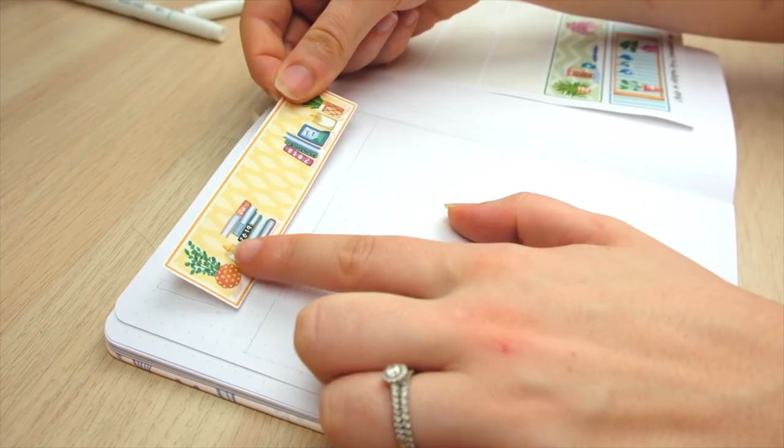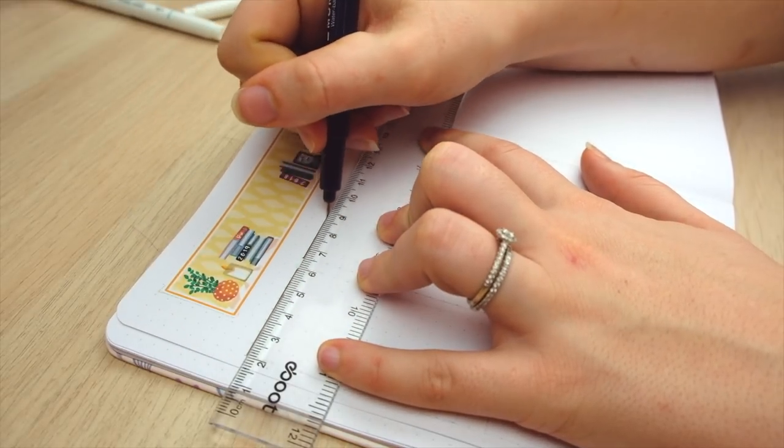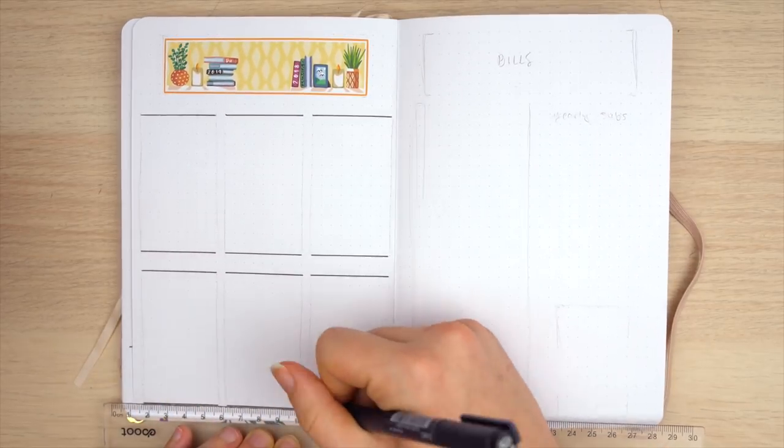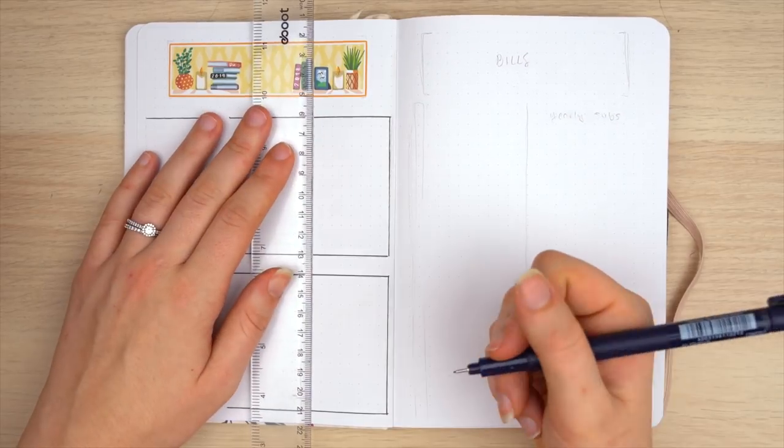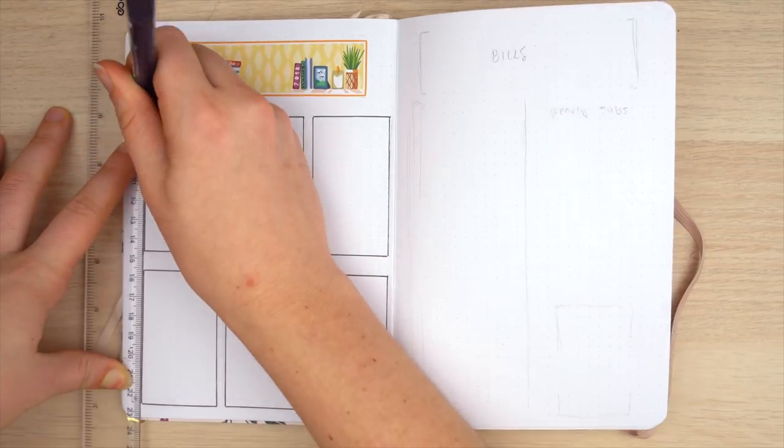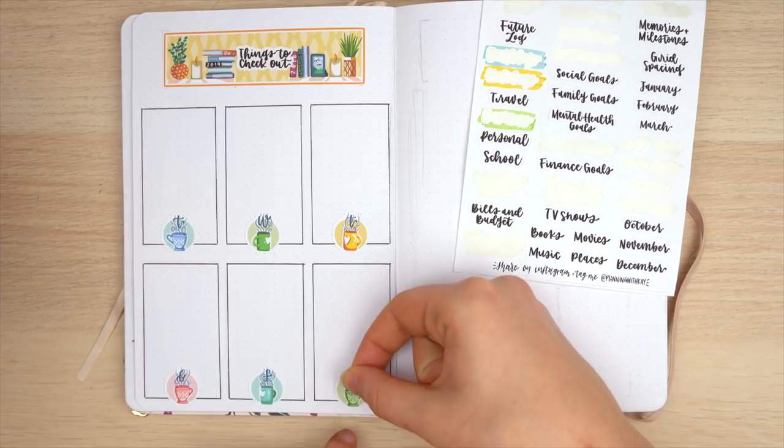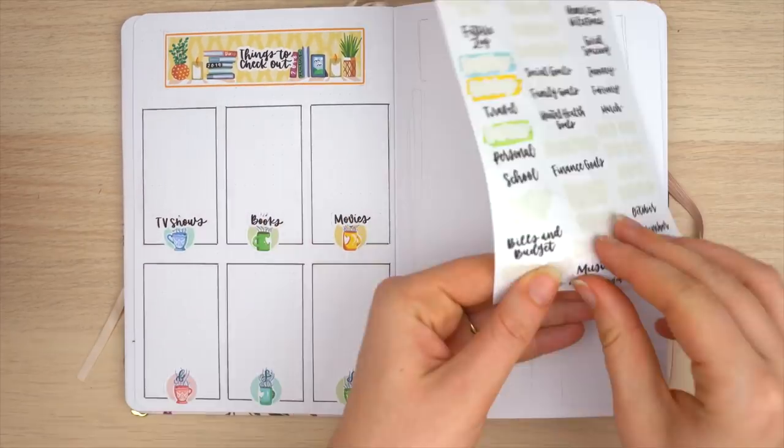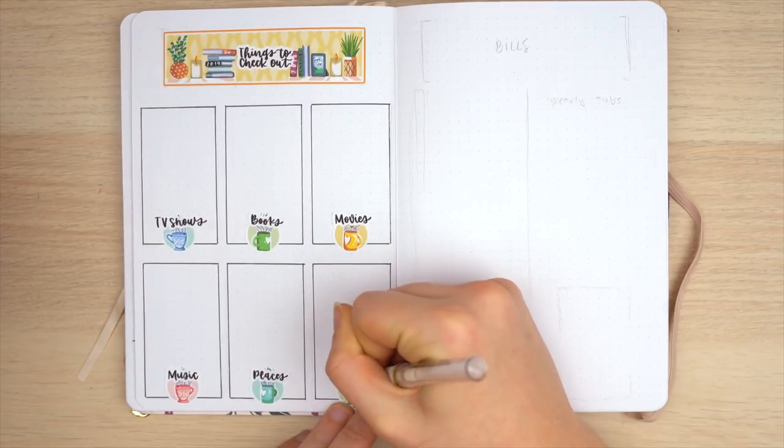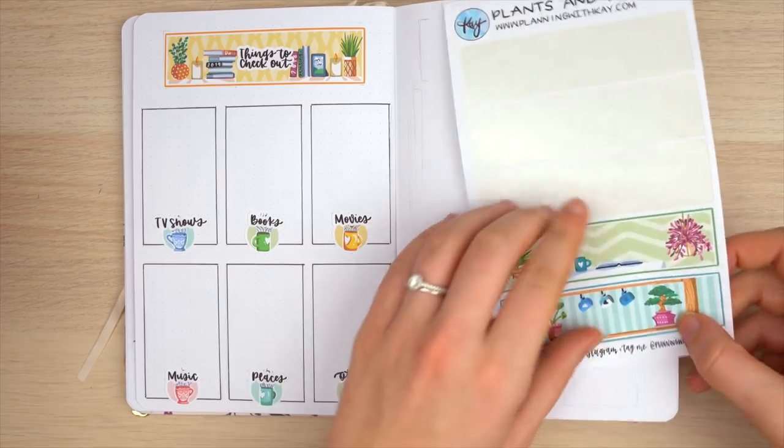Alright, so this is my second to last spread of this setup - we're almost there. On the left here, I'm creating a page called 'things to check out.' I went on my Instagram before filming this setup and asked about different spreads that you all love to set up when you're setting up a new bullet journal, and this was something that a lot of you really enjoy - having a spot to write down different shows or books or movies or places that you've been meaning to check out. I'm using my plants and pages kit here to set this page up, and I'm creating my headers here by taking these teacup weekly headers from the kit and combining that with some of the headers on my new bullet journal header sheet.